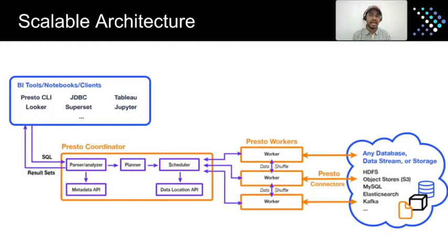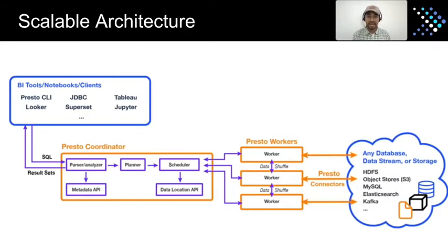Looking deeper at the coordinator architecture, it includes typical database components: a parser, compiler, and analyzer. The optimizer decides the most efficient plan to execute based on statistics and other information. The scheduler then schedules queries across the different workers. The data location API tells the scheduler where data is located, and the metadata API gives the coordinator information about tables, columns, and schemas of the underlying data — which might come via the Hive Metastore or a built-in catalog in relational databases. At the bottom, different connectors connect to a range of data sources.